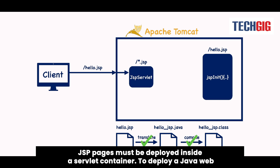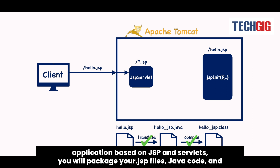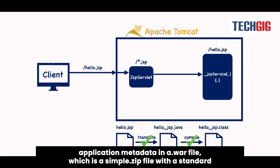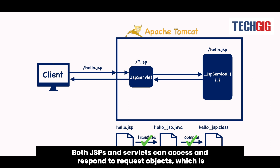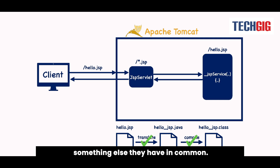JSP pages must be deployed inside a servlet container. To deploy a Java web application based on JSP and servlets, you will package your .jsp files, Java code, and application metadata in a WAR file, which is a simple .zip file with a standard structure for web applications. The JSP will be turned into a servlet once you load it into your servlet container. Both JSPs and servlets can access and respond to request objects, which is something else they have in common.